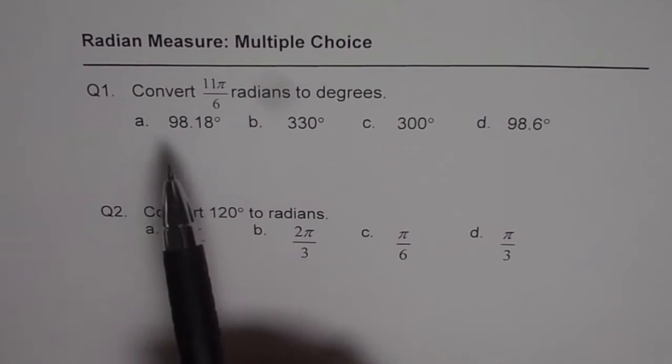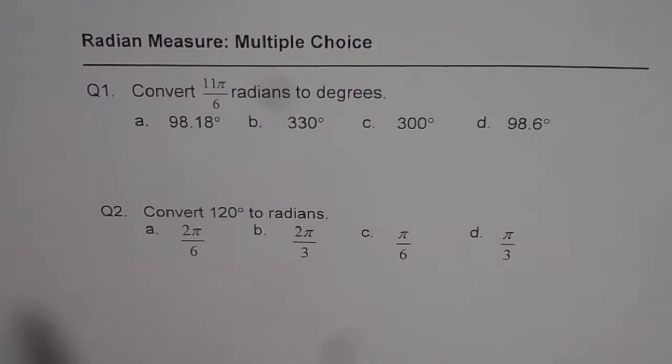Question number one is, convert 11π/6 radians to degrees. We are given four choices. And question number two is, convert 120 degrees to radians.